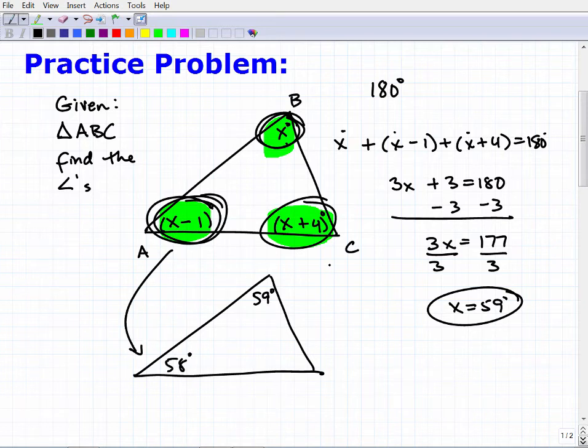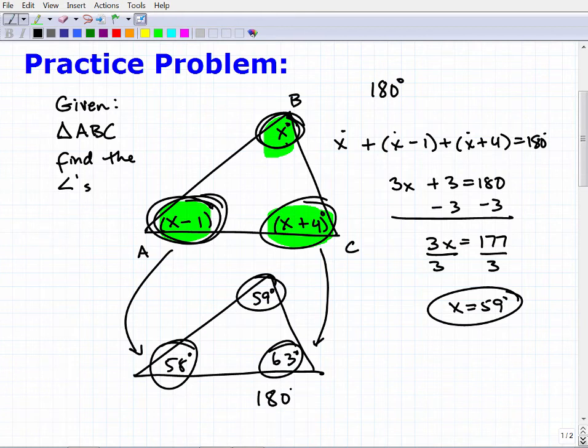And then this angle right here was X plus four. So that's going to be 59 plus four, which will be 63 degrees. So let's go ahead and add all these up just to check. 59 plus 58 plus 63. And when we add all these guys up, of course, we get our 180 degrees.